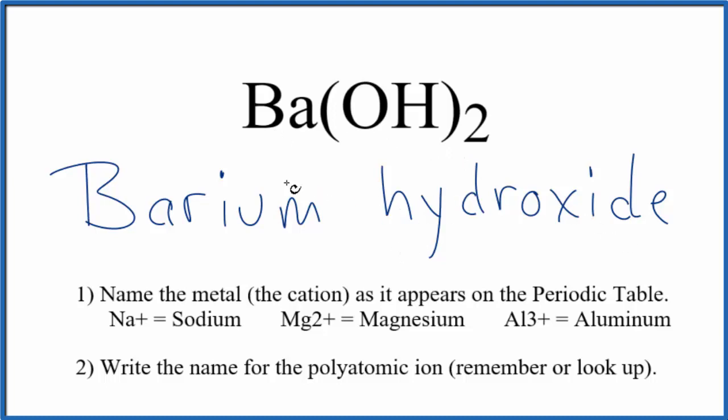If you're given this name here and asked to write the formula, you need to recognize that barium is in group two on the periodic table. That has a 2+ ionic charge, and the hydroxide ion always has a 1- charge.